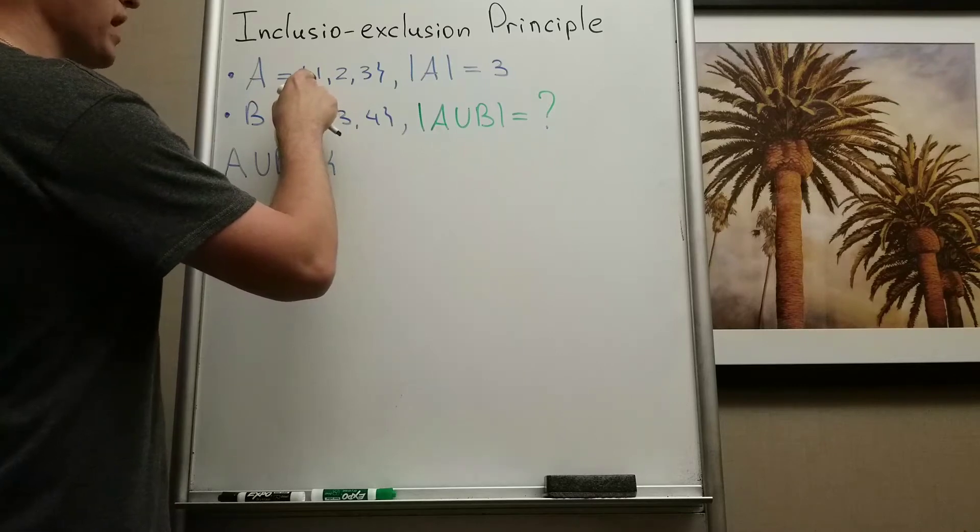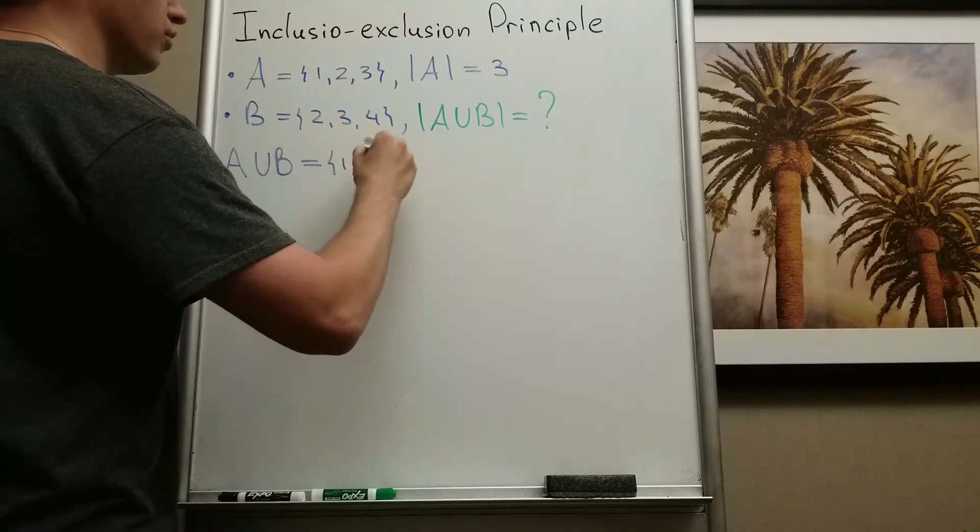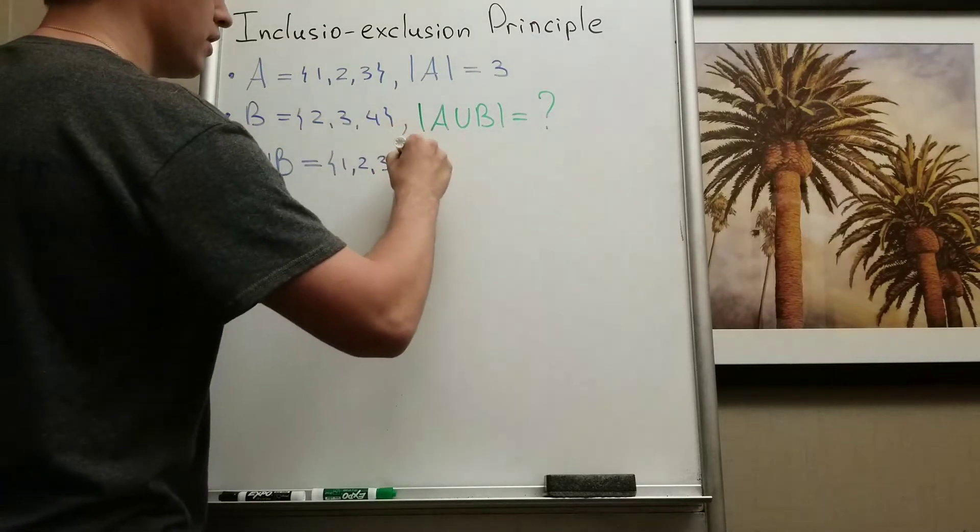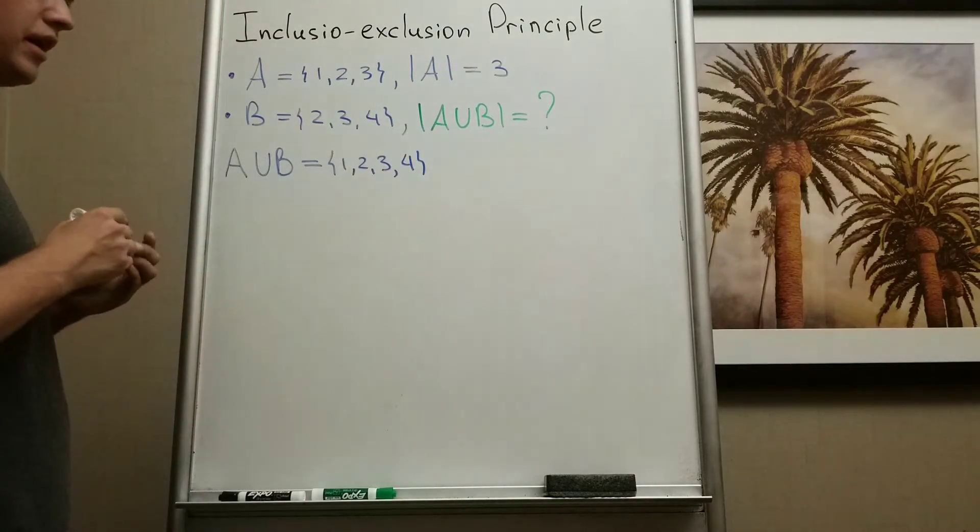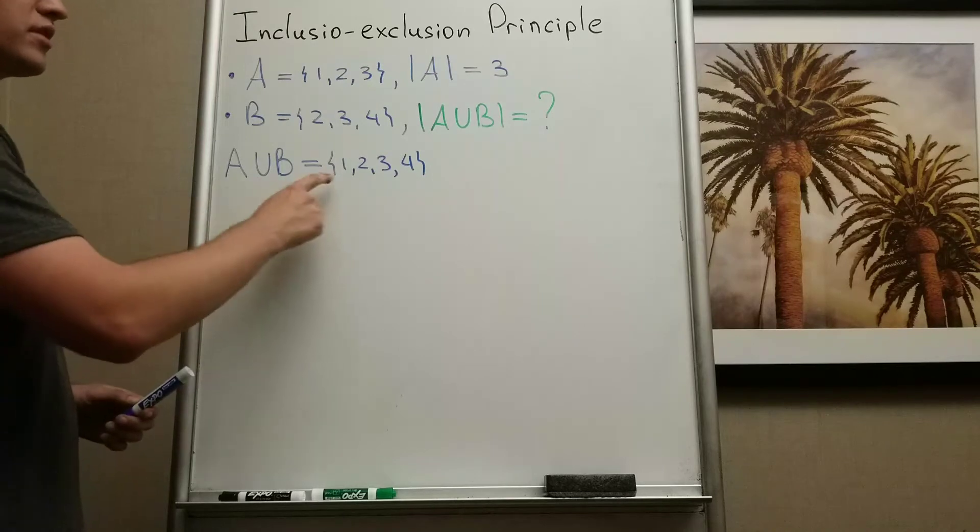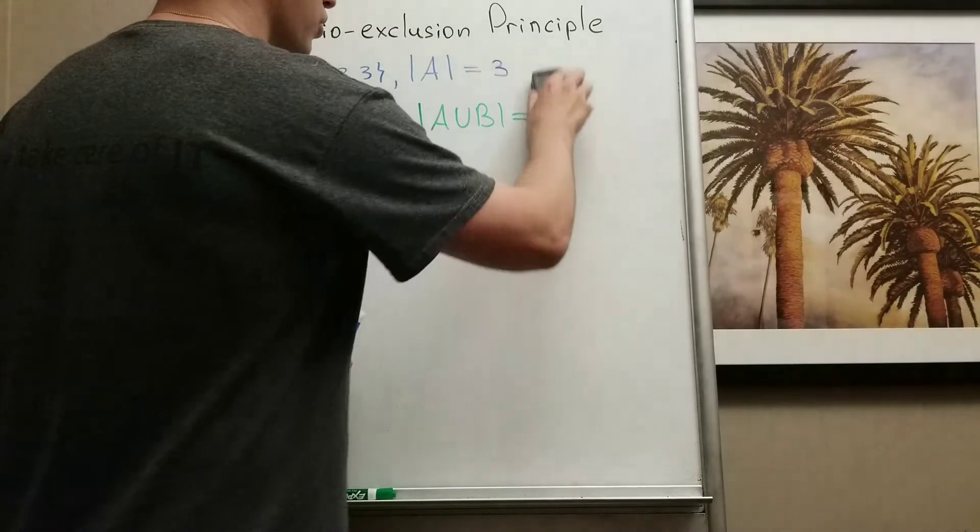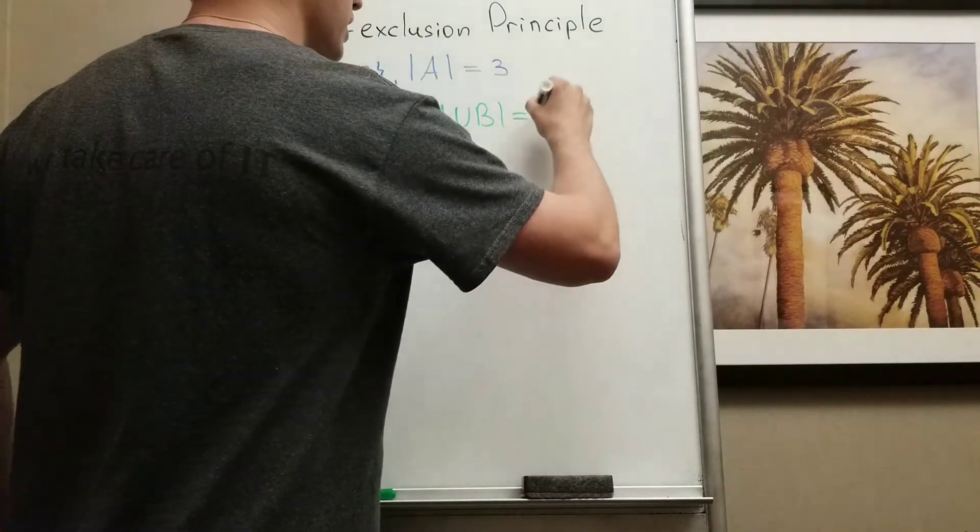And you know by definition A union B contains elements that lie in A or in B. So my A's elements are 1, 2, 3 and my B's elements are 2, 3, and 4. So I have one extra. And by definition of cardinality you can see A union B has four elements. So |A∪B| equals 4.